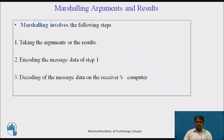Marshalling basically involves the following actions. First, taking arguments from the client process or the result from the server process that will form the message data to be sent to the remote process. Second, encoding the message data on the sender's computer — this encoding process involves the conversion of program objects into a stream format suitable for transmission and placing them into a message buffer. Third, decoding of message data on the receiver's computer — this decoding process involves the reconstruction of a program object from the message data that was received in stream form.